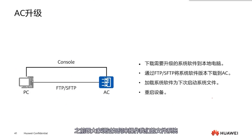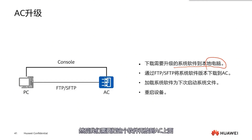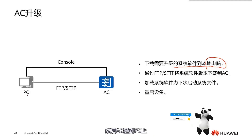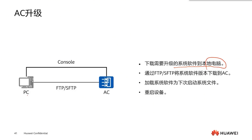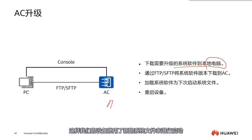Let's look at how to upgrade the AC. We need to download the upgrade software to our local computer, then transfer it to the AC. There are several methods: we can use a PC as an FTP or SFTP server and have the AC log onto the PC to retrieve it, or the AC can act as the server and the PC uploads the file to it. Once the file is transferred, we load the system software for the next boot, so the device will boot using the new system file. That's the whole principle of upgrading.